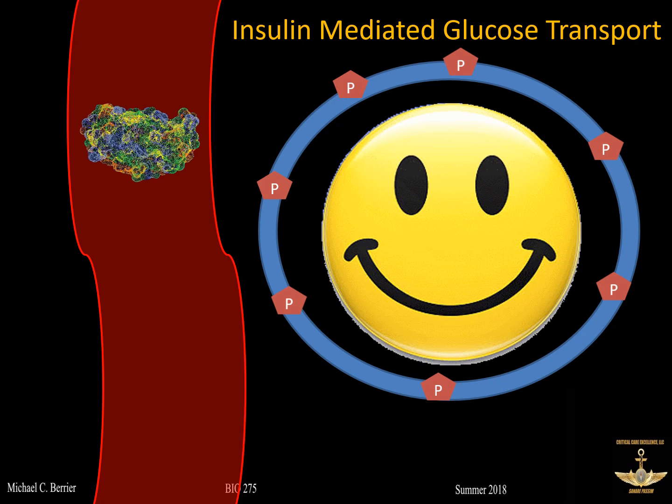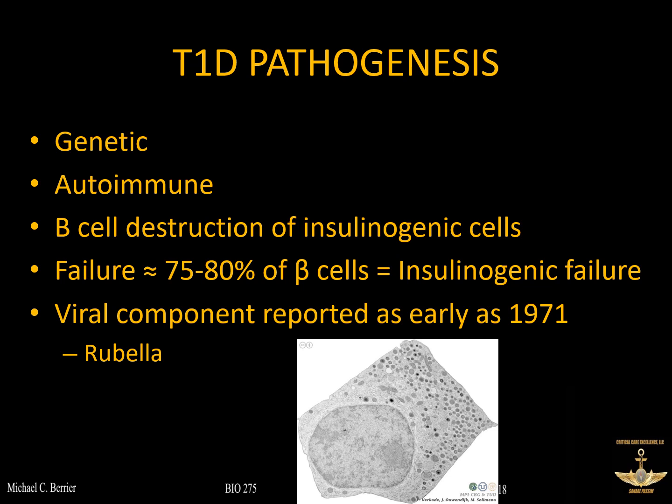When insulin doesn't show up, that's when we have type 1 diabetes. Type 1 diabetes is a genetic disease — you typically get it from mom, dad, or both. It's autoimmune: B cell macrophages turn on and destroy the insulogenic beta cells. When you lose 75 to 80 percent of your beta cells — you can see a beta cell here with its insulogenic pores where insulin comes from — that leads to insulogenic failure and type 1 diabetes. You no longer make insulin.